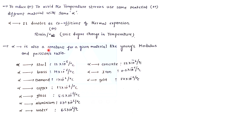Different materials have different alpha values. Steel: 12×10⁻⁶, brass: 19×10⁻⁶, diamond: 1×10⁻⁶, copper: 17×10⁻⁶, glass: 8.5×10⁻⁶, aluminium: 23.1×10⁻⁶, water: 6.5×10⁻⁶, concrete: 12×10⁻⁶, iron: 0.2×10⁻⁶, gold: 14×10⁻⁶.